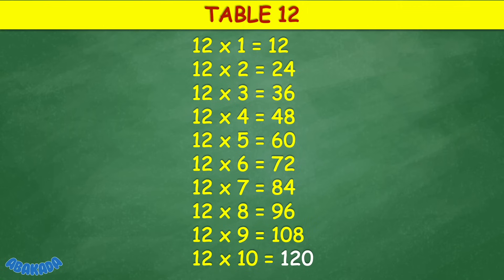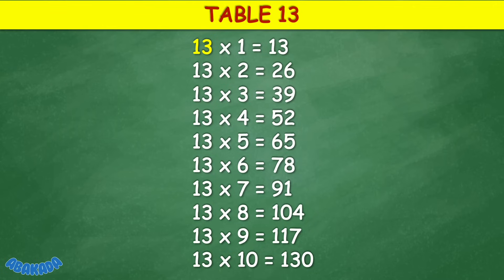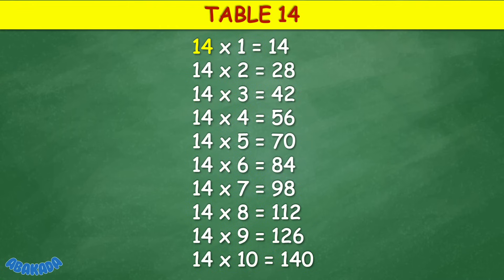12 times 10 equals 120. Table 13: 13 times 1 equals 13, 13 times 2 equals 26, 13 times 3 equals 39, 13 times 4 equals 52, 13 times 5 equals 65, 13 times 6 equals 78, 13 times 7 equals 91, 13 times 8 equals 104, 13 times 9 equals 117, 13 times 10 equals 130.